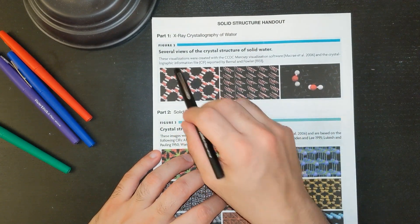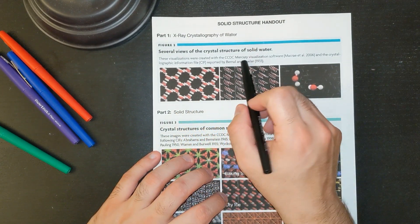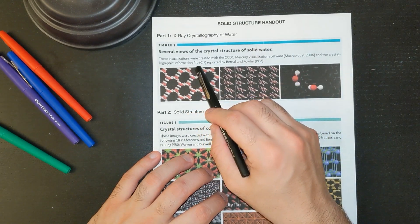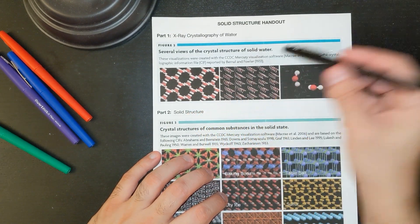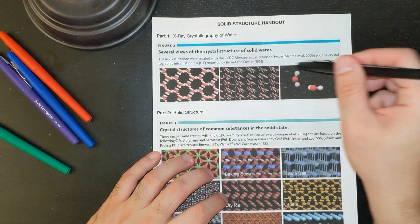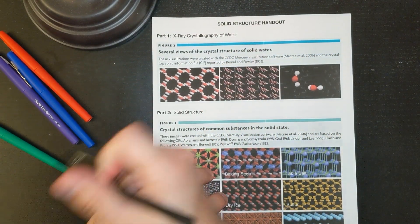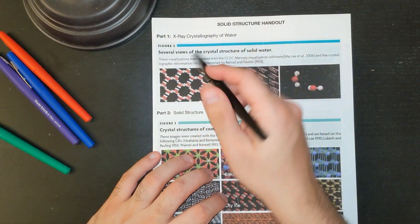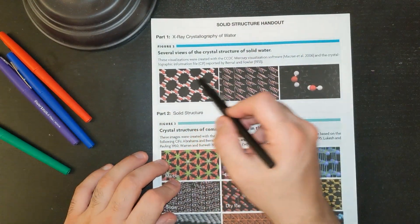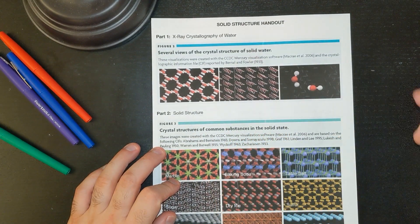Here is the solid structure. These visualizations were created with the CCDC Mercury visualization software and the crystallographic information file reported by Bernal and Fowler. Here is all of the same parts of the structure. Here's what water looks like — it looks like a beautiful array, like it's in a pattern, with sheets and sheets of it as repeating patterns.